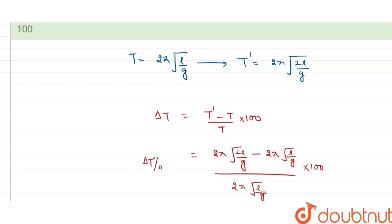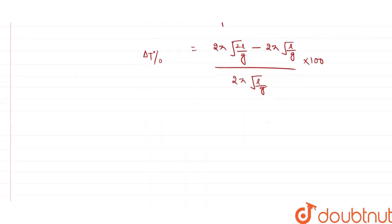After calculating this, we will have the value as root 2 minus 1 upon 1, because 2π under root l upon g and 2π under root l upon g cancel out. So we will have root 2 minus 1 upon 1 into 100.